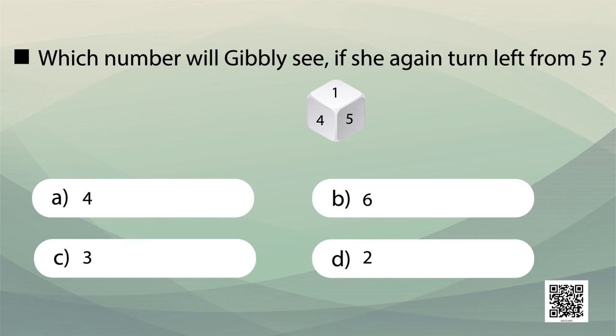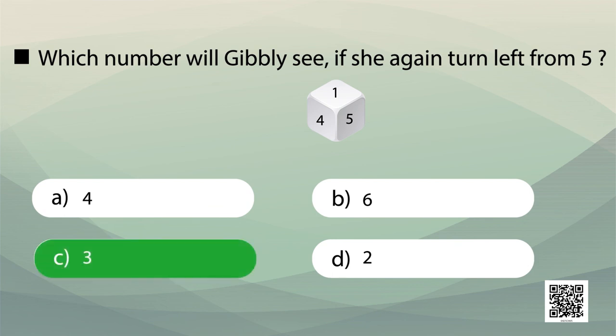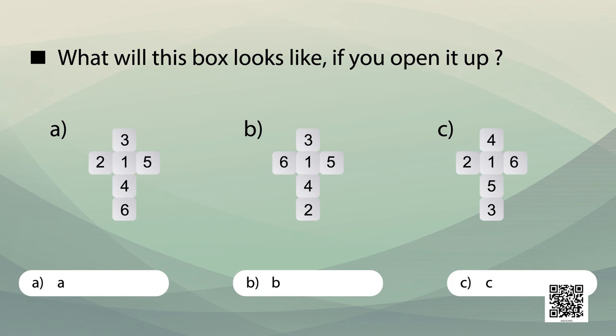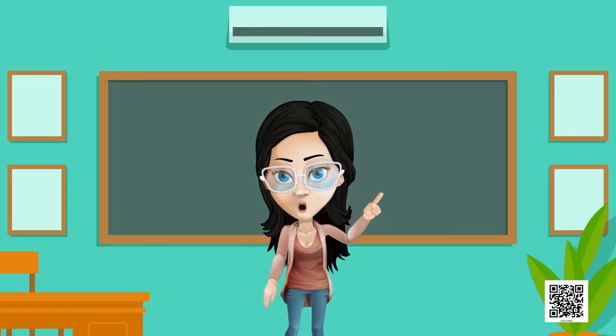What will the dice look like if you open it up? Mark the correct picture. Imagine opening up the dice, keeping in mind that the sum of numbers on opposite faces must add up to seven. The right answer is picture A.